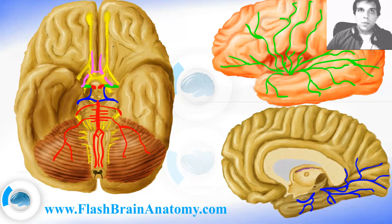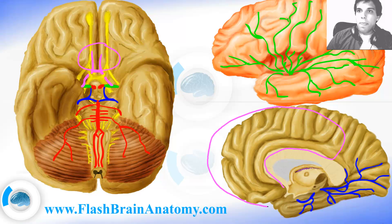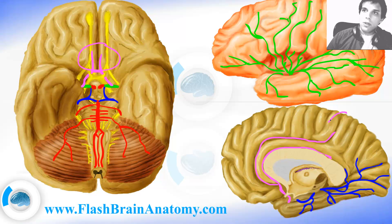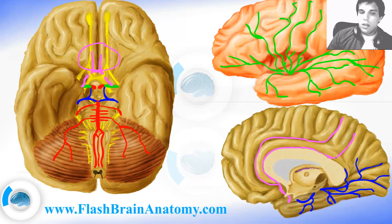Now I will show you how these anterior arteries supply this part of the brain, illustrating each branch. The anterior cerebral artery goes here, and when it reaches here it separates into the pericallosal artery that goes around the corpus callosum, and the callosomarginal artery that goes around the cingulate gyrus. Up there it gives the cingulate branch.